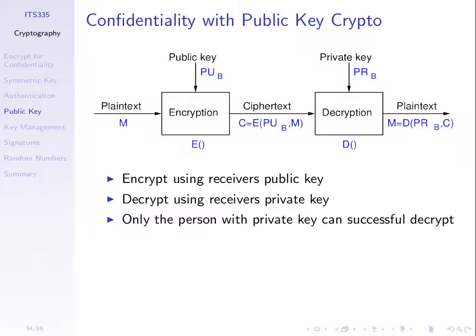What I mean by it won't work is we won't get the original plain text. So the idea here is that if we encrypt with a public key of B, we get some ciphertext. The only way to successfully decrypt that ciphertext is to use the private key of B — we need to use the other key in the key pair. And there's only one person in the world that has the private key of B, and that's B.